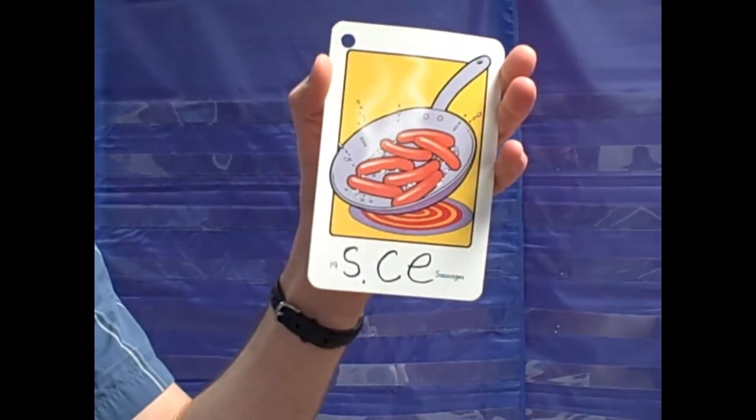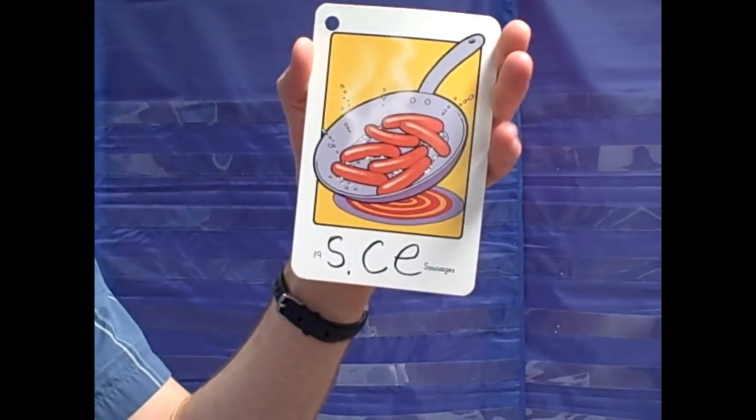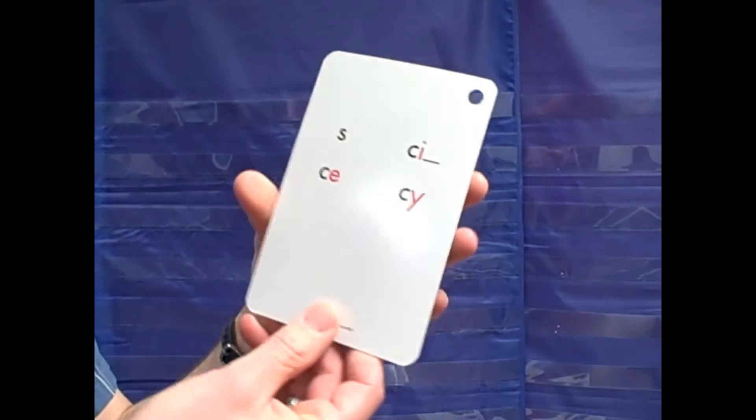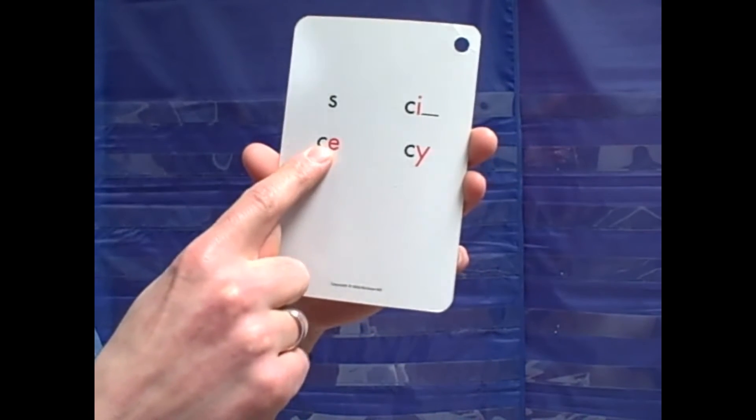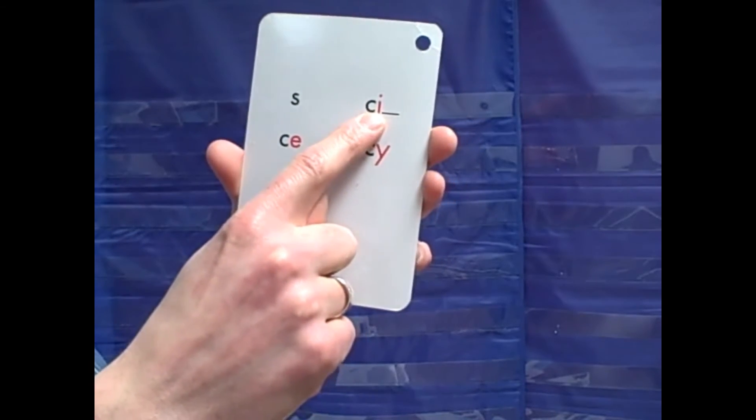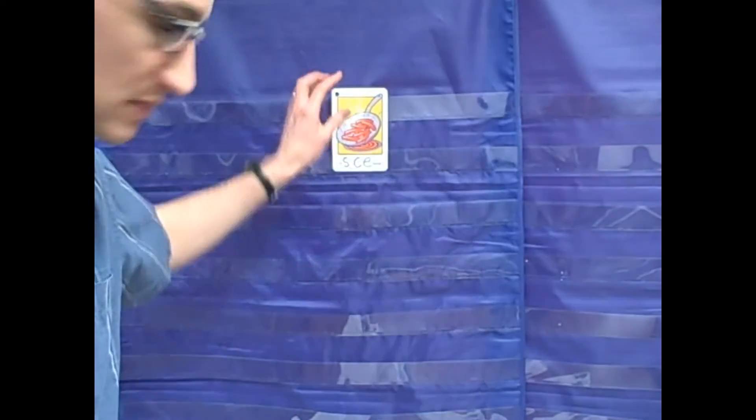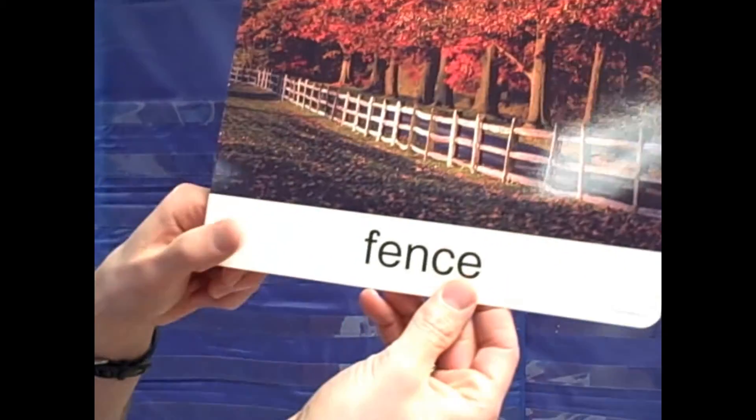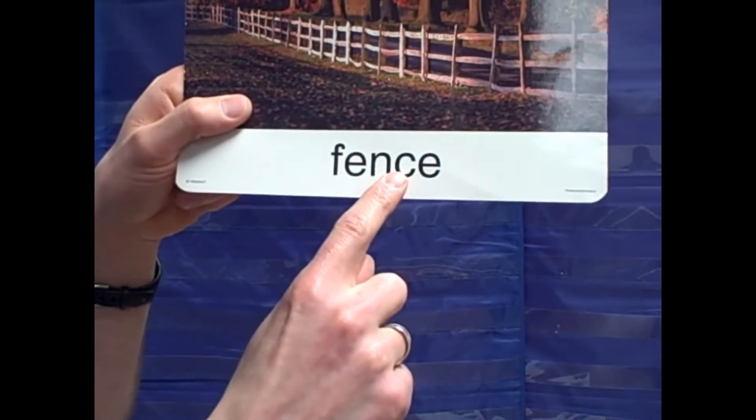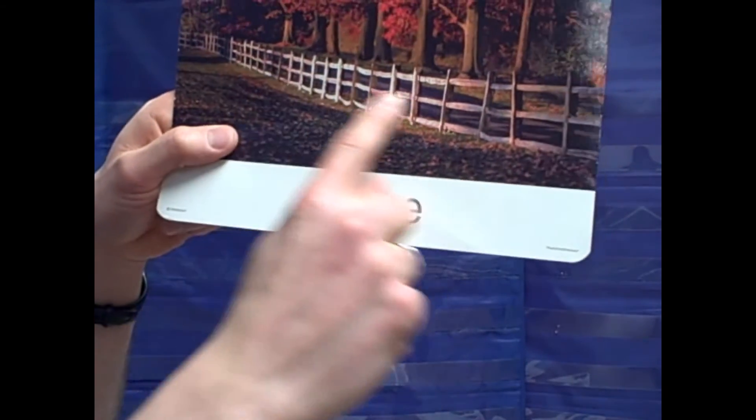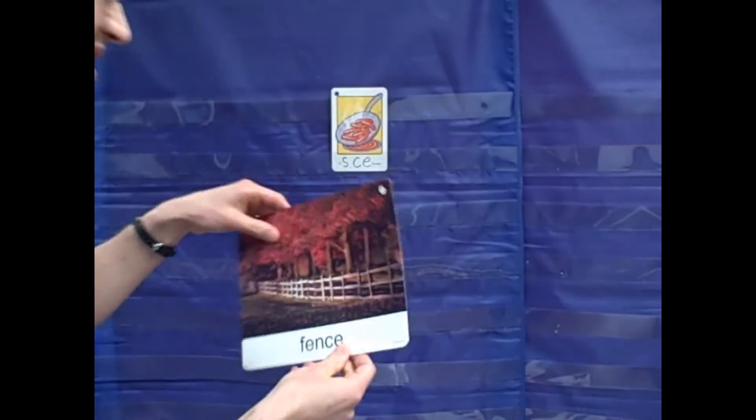Next, we will practice spellings for the sound ssss. In English, we spell this sound four ways. Today, we'll practice C-E says ssss, C-I says ssss, and C-Y says ssss. This is a fence. This picture shows a fence. This spelling is C-E. We say the word fence, and then we read the word fence. C-E at the end says ssss.